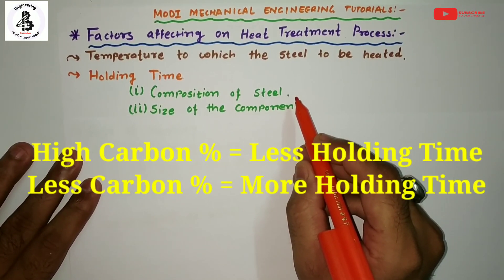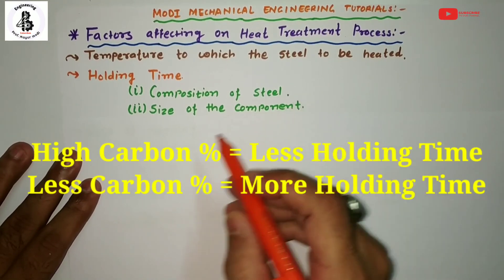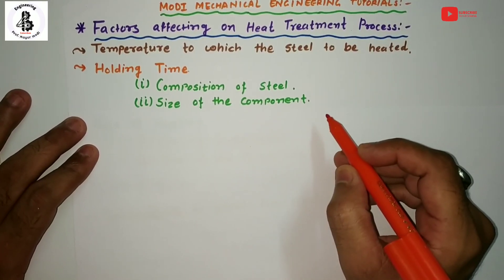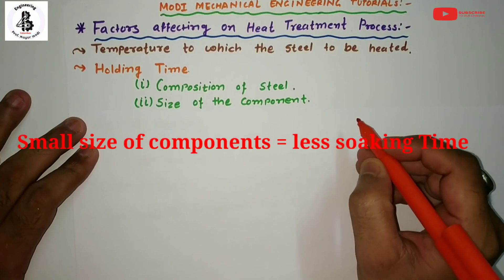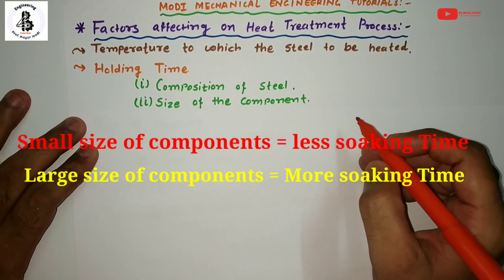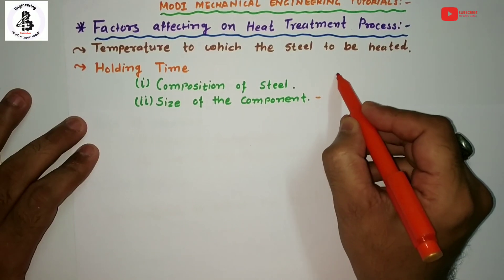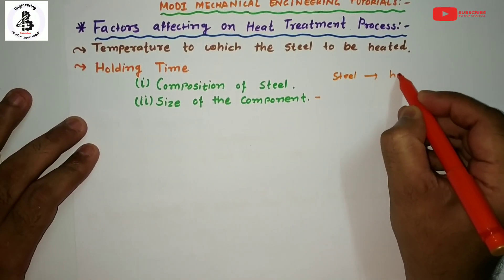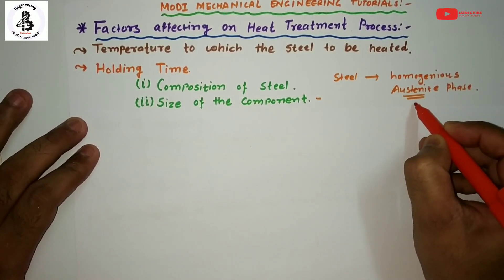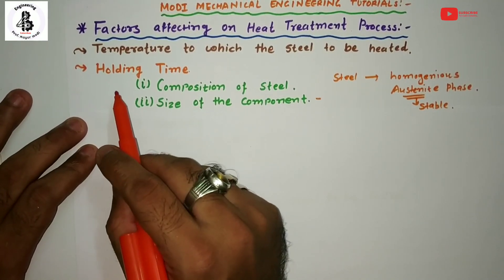Up to two percent carbon there will be all categories of steel, and holding time depends upon the compositions of the steel. For the size of the component: if the component to be heated is small then soaking time will be less. If the component is of larger size, then the soaking period will be more to get the homogeneous austenite phase, converting the steel structure into stable austenite.